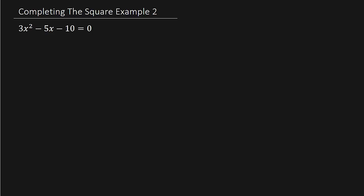So for completing the square, the one thing you've got to remember is you cannot have a number in front of x squared. Well, the number in front of x squared has to be a 1. And you can see we have a 3. So the first thing we're going to do is we're going to divide everything by 3 to get rid of that number. So that's x squared minus 5 thirds x minus 10 thirds equals 0.